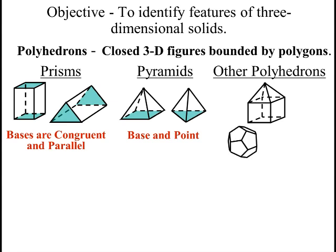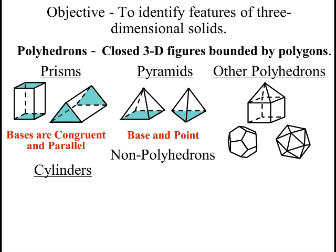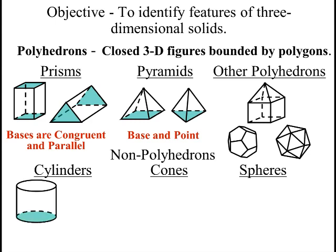Now non-polyhedrons would be, for us, the figures that have curves, so cylinders, cones, and spheres. We're going to be looking at cylinders, which are much like prisms. They have two bases. They may be oblique, which doesn't change the volume of them but does change the surface area.